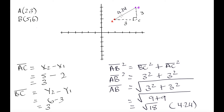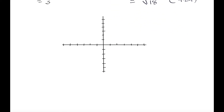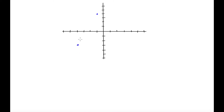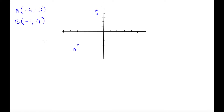Let's go over another example. We are given two points and asked to calculate the distance between them. We label them point A and point B, and write down the coordinates. Point A has coordinates x equals negative 4 and y equals negative 3. Point B has coordinates x equals negative 1 and y equals 4. So with these two coordinates, we identify x1, x2, y1, and y2.